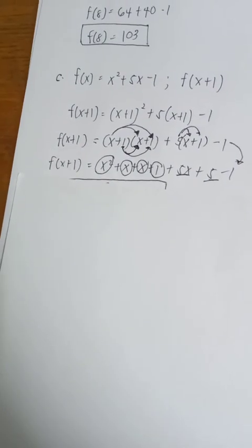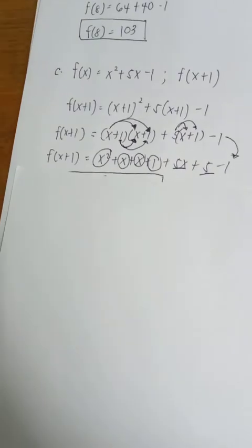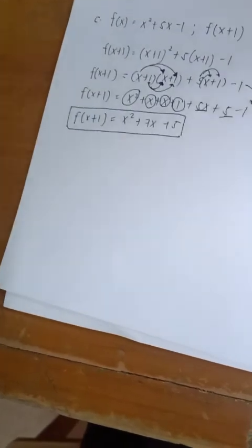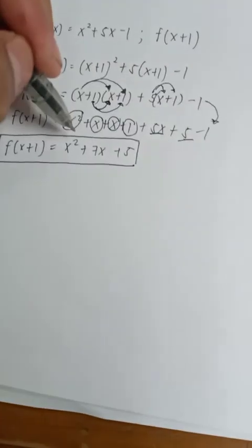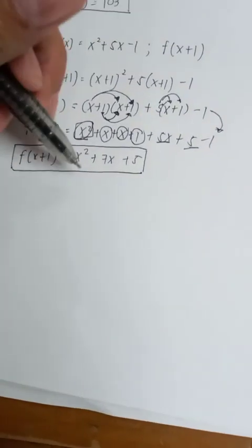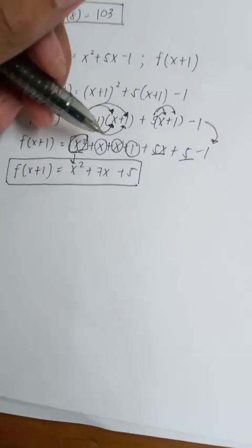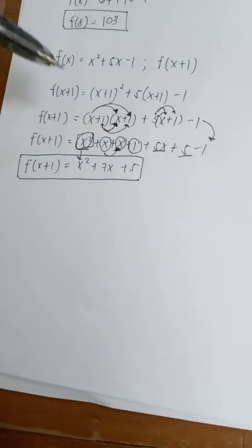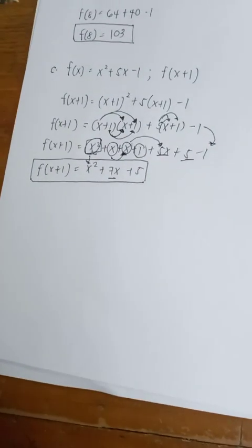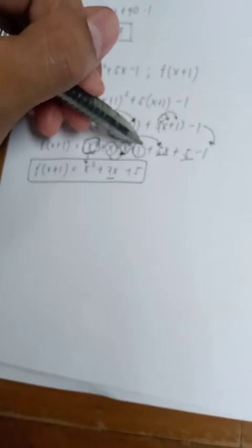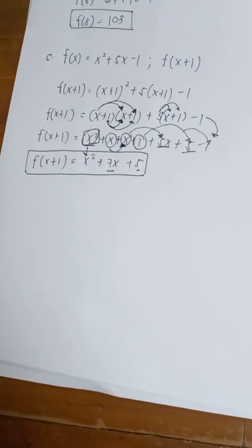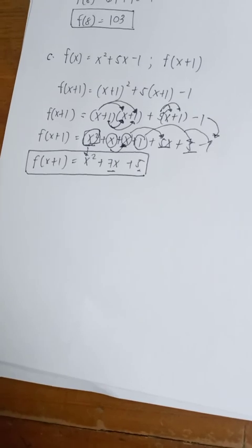Now combine like terms. Since x squared has no partner, bring it down. Then x plus x is 2x, plus 5x gives us 7x. Then add the constant numbers: 1 plus 5 is 6, minus 1 is 5. So we have the final answer of x squared plus 7x plus 5.